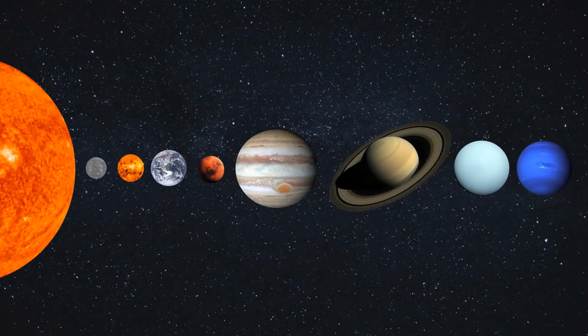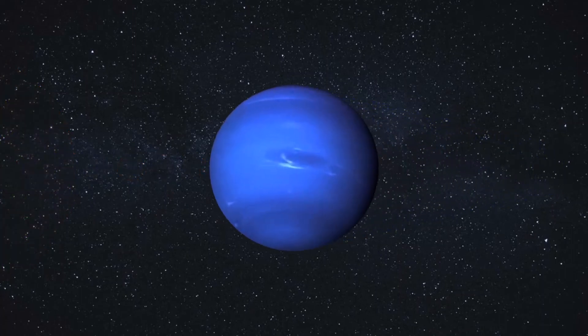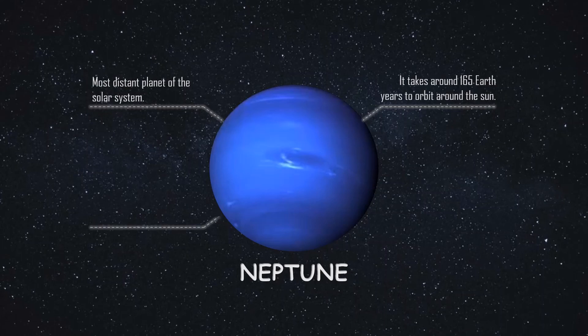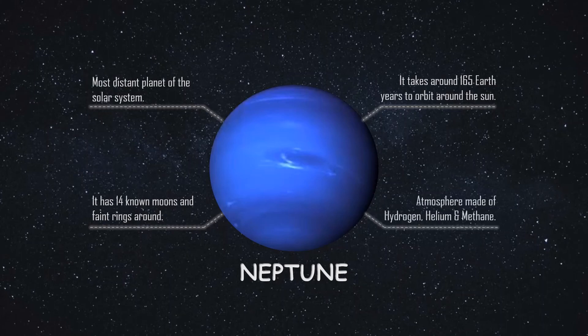The last planet is Neptune, which is the farthest in the solar system. It takes around 165 Earth years to orbit around the sun. It has 14 known moons and some faint rings. Being the farthest, it has a very cold temperature, and its atmosphere is made up of hydrogen, helium, and methane, thus not supporting life.